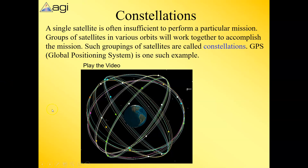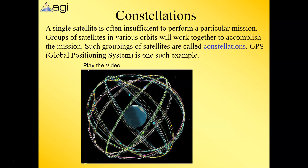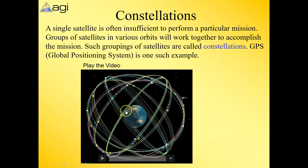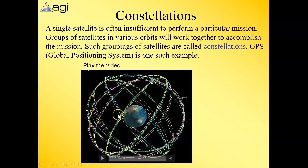Finally, let's look at constellations — not special orbits per se, but a group of satellites working together to perform a specific mission. GPS is a familiar example; this is what a GPS constellation looks like. Satellites in a constellation may communicate with each other, or relay communications through a geosynchronous satellite to reach distant locations like Australia.